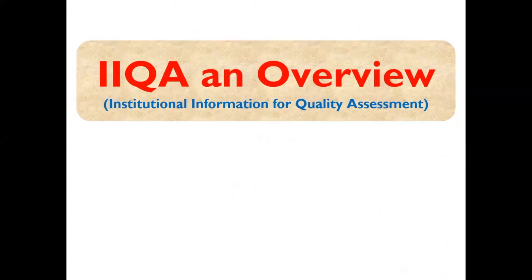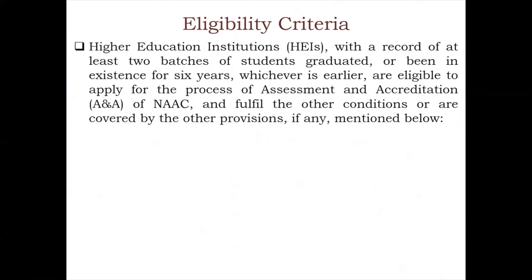In my previous presentation I told you the eligibility criteria. For higher education institutions who want to apply for NAAC assessment and accreditation, two important conditions must be fulfilled: either two batches should have graduated, or six years of existence, whichever is earlier. Such institutions are eligible to apply for NAAC assessment and accreditation.